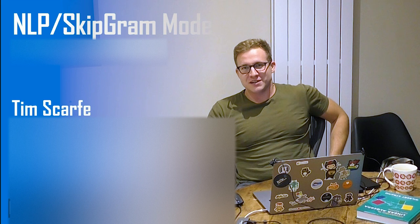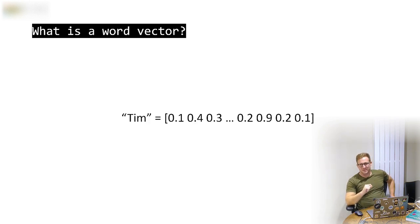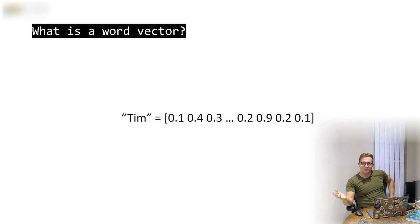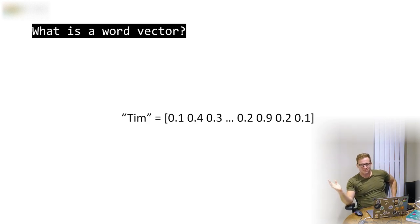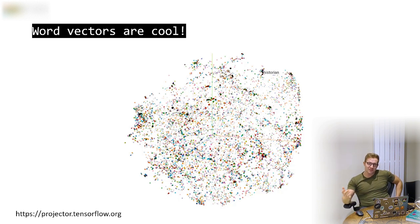The SkipGram model was one of the first widely used algorithms for generating universal neural word embeddings. A word vector is just a set of numbers which geometrically represents the linguistic or semantic context of a word. The dimensionality of the vector is a parameter of the algorithm. Because we have such a complex language, a high dimensionality is needed to capture most of the information inherent in it. There's a wonderful website called projector.tensorflow.org which allows you to load in high-dimensional vectors and project them into two or three dimensions to visualize them.